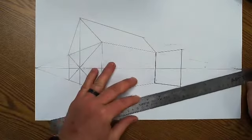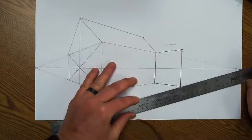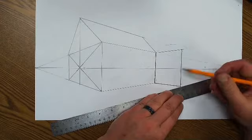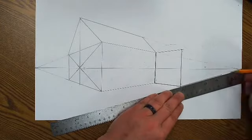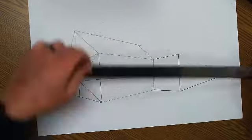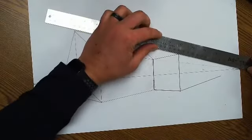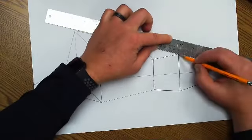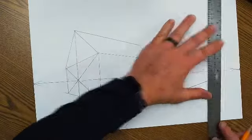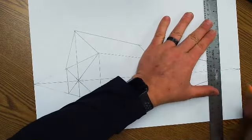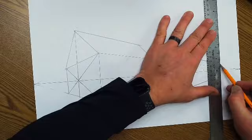So moving on, we'll create the right-hand side of our garage. So it will go to the right-hand side vanishing point. And again, you can make this as large or as small as you want.